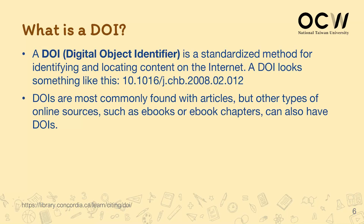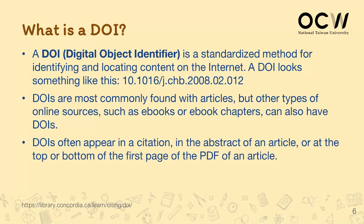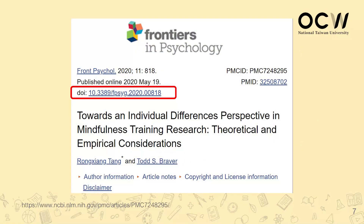DOIs are usually commonly found with articles, but other types of online resources such as e-books or e-book chapters could also have their individual DOIs. A DOI doesn't necessarily mean the website where the book or article is present, but rather it is a unique identifier that usually appears on the top of the article or PDF file, for you to use as part of your referencing. As you can see in Frontiers in Psychology, you can see the publishing date, when it was published online, as well as its DOI on the top of the article.